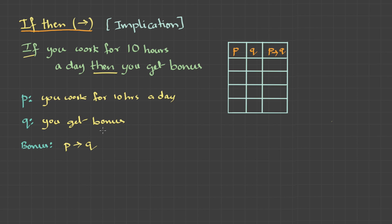Take a minute and think about this — it's very critical. Let's think about the false case first. This statement is given by your boss: if you work for 10 hours a day, you get the bonus. But you're not happy with the proposal, so you don't work for 10 hours a day — therefore P is false. Your boss doesn't give you a bonus. That's possible and quite acceptable, because you didn't do it. And if P is true, you worked and you get the bonus — that's also acceptable.